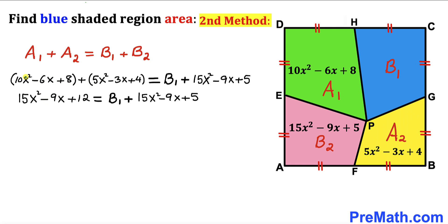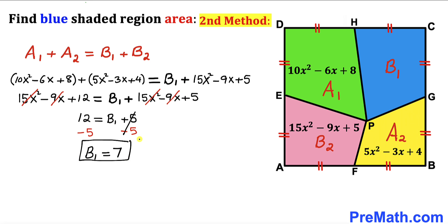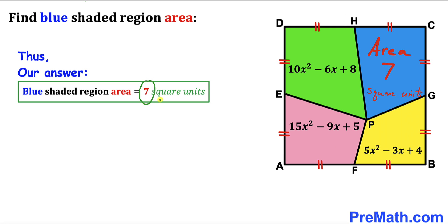Combining like terms on the left-hand side, the 15x² terms cancel and the negative 9x terms cancel, leaving 12 equals b₁ plus 5. Subtracting 5 from both sides gives b₁ equals 7 square units. Thus the area of the blue shaded region is 7 square units. Thanks for watching and please subscribe to the channel for more exciting videos.